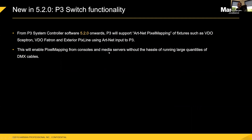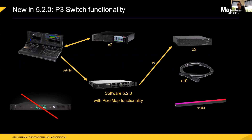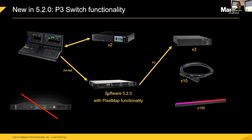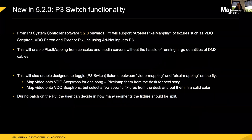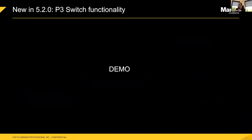From version 5.2 onwards, the P3 will support ArtNet pixel mapping inputs. So for fixtures like Skeptrons and Fatrons, you can toggle between pixel map from the desk using ArtNet, or P3 video looks. This allows you to do pixel mapping from the desk without having to run large quantities of DMX cables. You can even use a P3 system with only an ArtNet feed from a lighting desk and never switch to video — in this case you're using the P3 as an ArtNet-to-P3 converter, dealing with all the addressing and modes without using the video part at all.